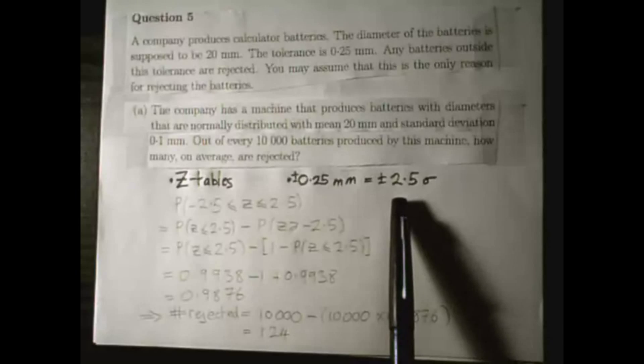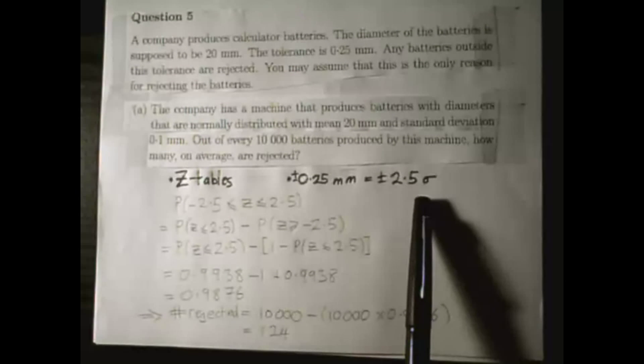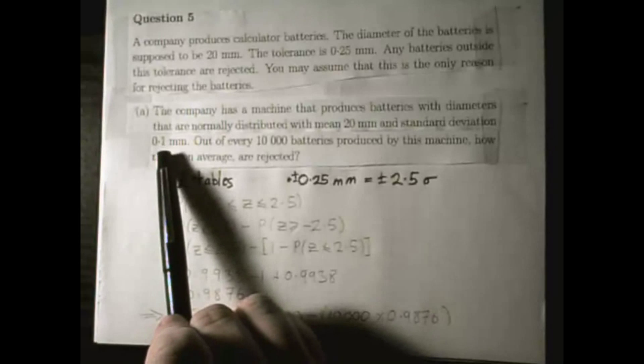So that's plus or minus 2.5 sigma, or 2.5 times the standard deviation, which is 0.1mm.